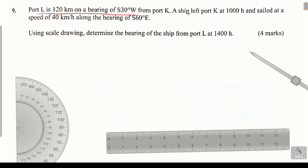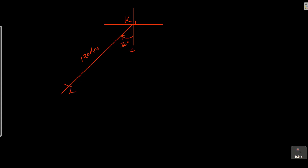A ship left port K at 10:00 hours and sailed at a speed of 40 kilometers per hour along the bearing of south 60 degrees east. So now you are supposed to measure south 60 degrees east from port K. We are going to measure it from south towards the east — that is 60 degrees — that is what you mean by south 60 degrees east.